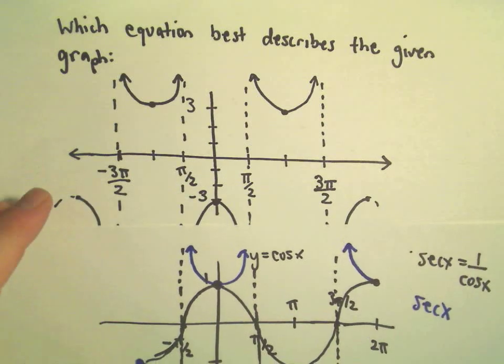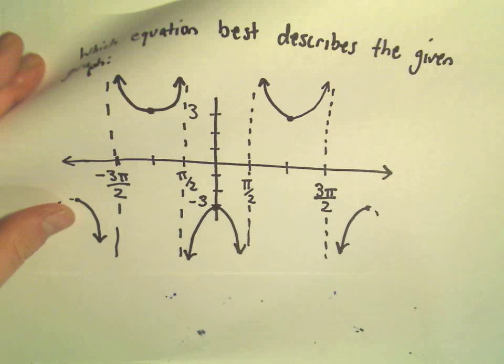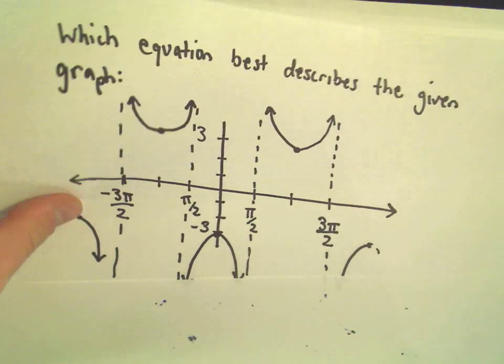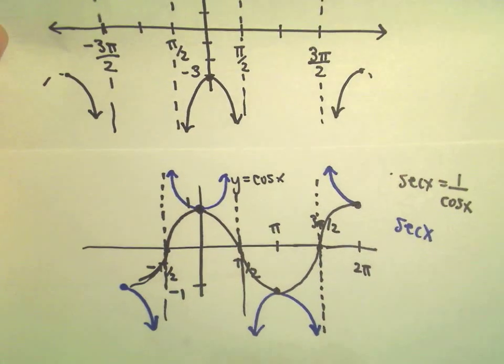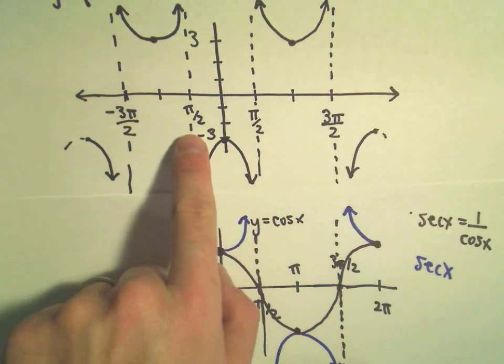Okay, well if we go back to our original graph, to me this is pretty close to secant x, right? I mean it's got the asymptotes occurring in the same place. You still have asymptotes at pi over 2.